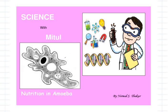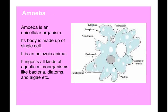Amoeba is a unicellular organism. It means its body is made up of a single cell. It is a holozoic animal, which means it ingests the whole particle of food. It ingests all kinds of aquatic microorganisms like bacteria, diatoms, and algae, etc.